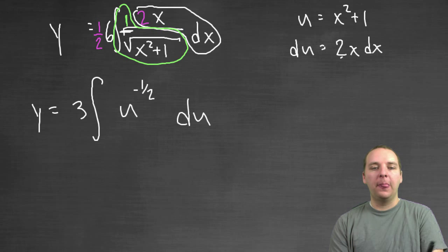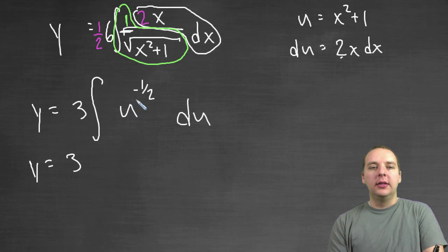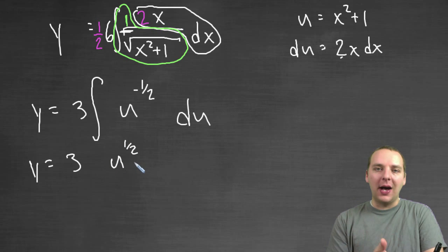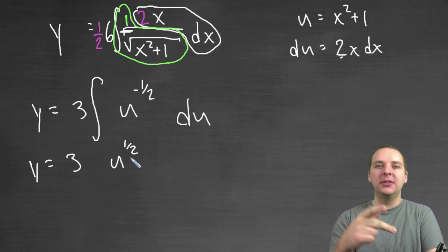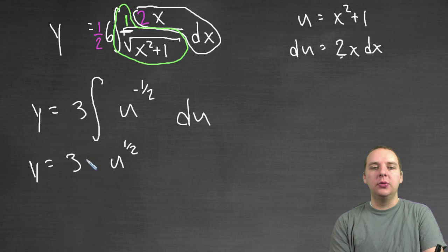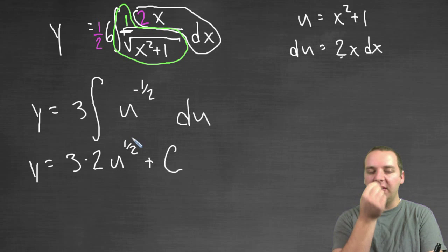This is a simple power rule. We'd get y equals 3. This would be u to the positive 1 half, divided by 1 half. But instead of that I'll say times the reciprocal. So times 2 over 1. Plus c. So all of this is basic, straightforward, calc 1 type stuff. Power rule integration.